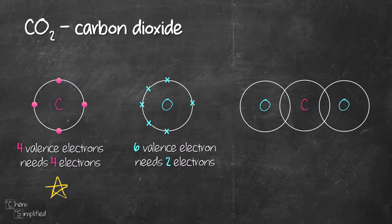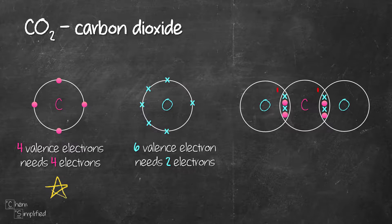Since oxygen shares two electrons, carbon will also share two electrons. We do the same thing for the other oxygen — it shares two electrons and carbon shares two electrons. Now all four valence electrons of carbon are already used up and carbon is already octet, having eight electrons in total.